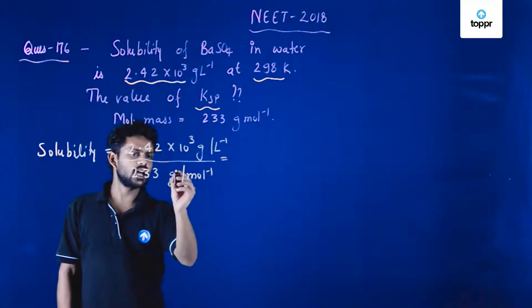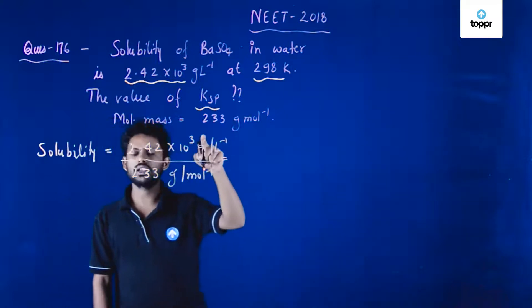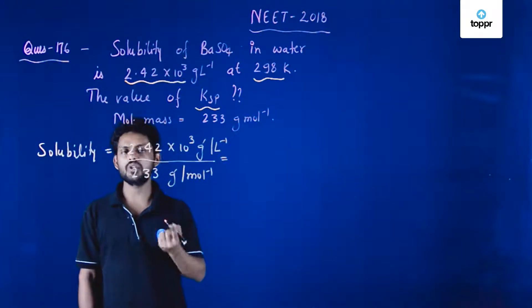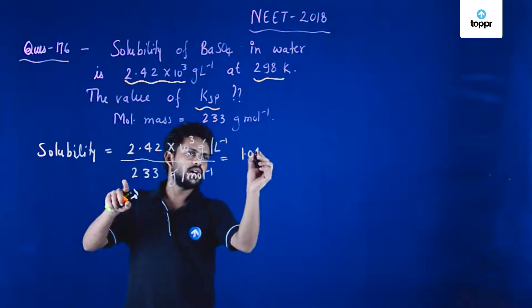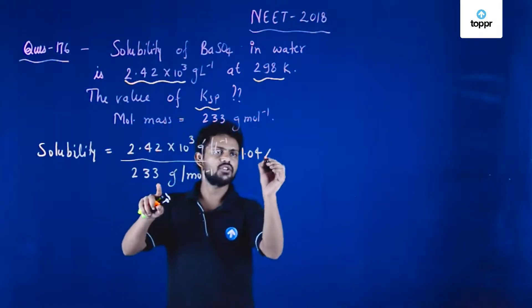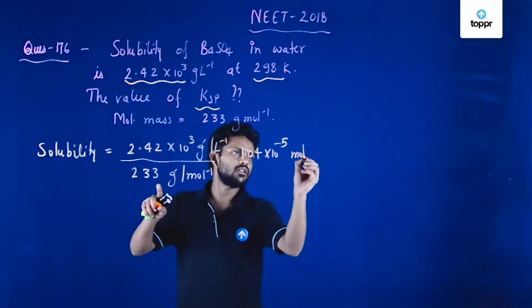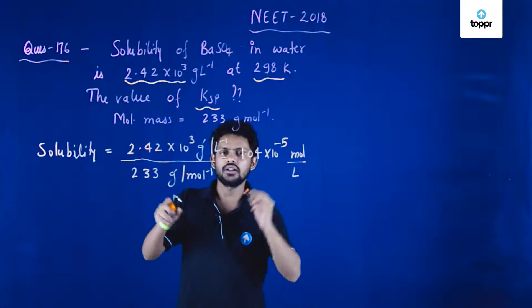If you look at the units, the grams cancel out and moles come to the numerator, so it becomes moles per liter. If you calculate this, you get 1.04 × 10^-5 moles per liter.